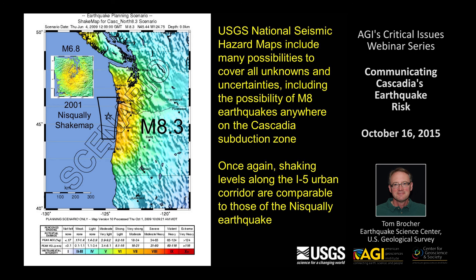There are a lot of uncertainties and unknowns about the next subduction zone earthquake — how big it will be, where it will start, and how far toward the coast it will rupture. The advantage of the USGS national seismic hazard maps is that they incorporate all these unknowns as different possibilities, including the possibility that a magnitude 8.3 earthquake could occur anywhere along the subduction zone.